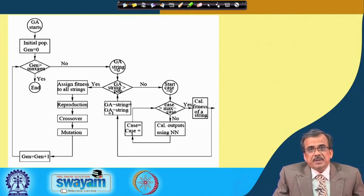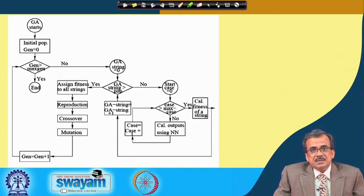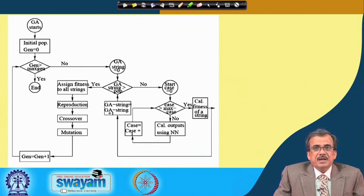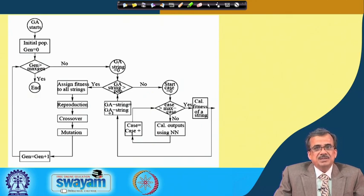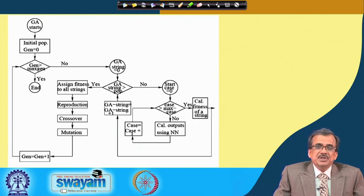We have discussed how to encode the number of hidden layers, the number of neurons in each of the hidden layers — that is the topology or architecture of the network — and how to encode the connecting weights, the coefficient of transfer function, and the bias values inside the GA string. Ultimately, the GA string is going to carry the complete information of the neural network.